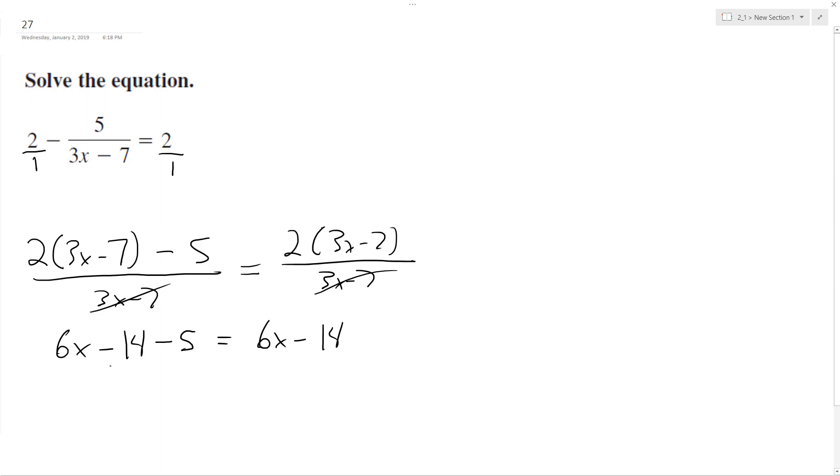Uh-oh. Because both my 6x's cancel out here, go to 0, I end up with negative 19 equals negative 14, which is not possible, so no solution.